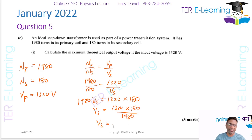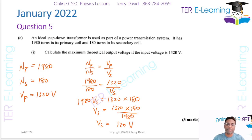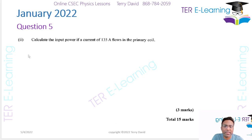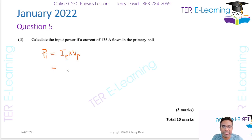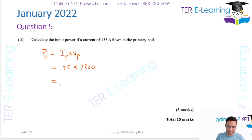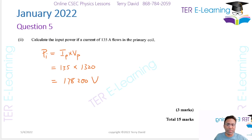Therefore Vs = (1320 × 180) / 1980 = 120 V. The secondary voltage is 120 V. Next, calculate the input power given that a current of 135 A flows in the primary. Input power Pi = Ip × Vp = 135 × 1320 = 178,200 W.